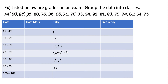Now that we've grouped all of our data into classes we can find the class frequency for each. The class frequency is how many values fall in each class. Because we had one grade between 40 and 49, that class frequency is 1. We had two grades between 50 and 59, so that class frequency is 2, and so on. If we add up all of these class frequencies to find our total frequency, it adds up to 20.